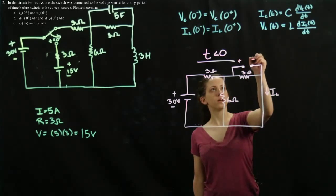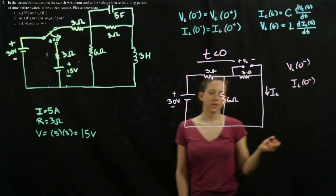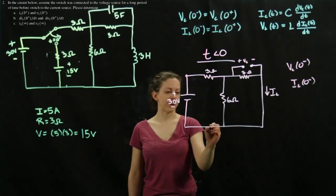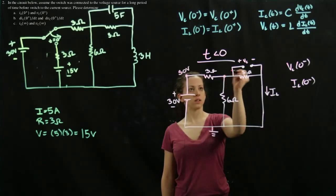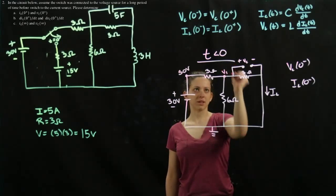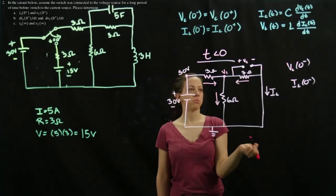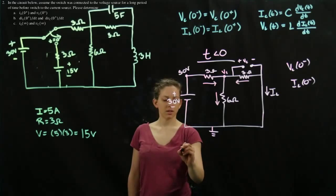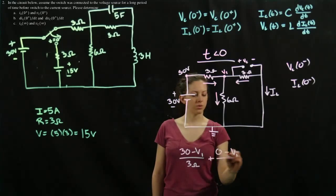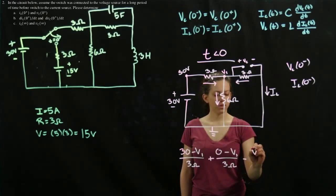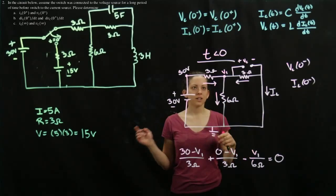What we're solving for is Vc(0⁻) and IL(0⁻) in this circuit. We set the ground first — always the first thing you do. Then we know that this node voltage is 30 volts, and this is our unknown voltage, which we'll label V1, and label all the currents. So we have: (30 − V1)/3 + (0 − V1)/3 − V1/6 = 0, because the sum of currents in minus currents out equals zero.